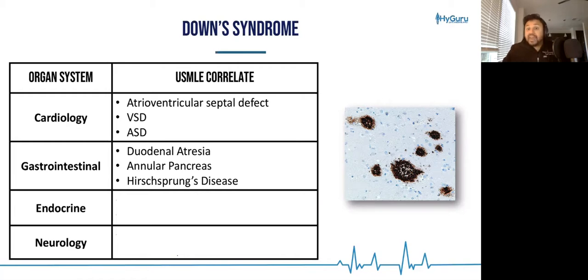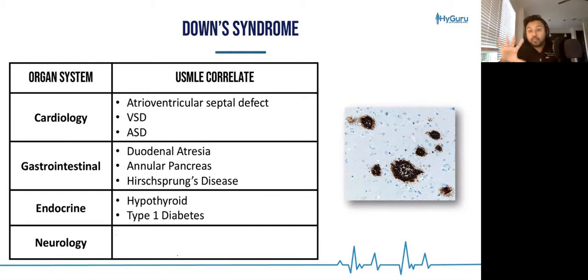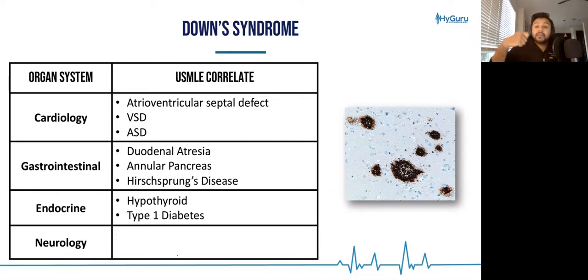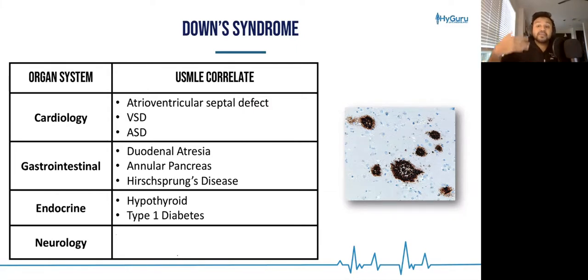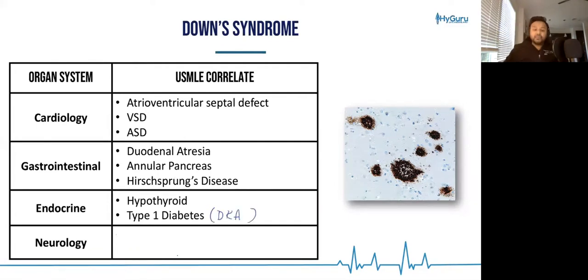From an endocrine standpoint, think of patients with trisomy 21 as very autoimmune. They may have a predilection to becoming hypothyroid, and they may develop type 1 diabetes. On the USMLE, type 1 diabetes typically presents as DKA.